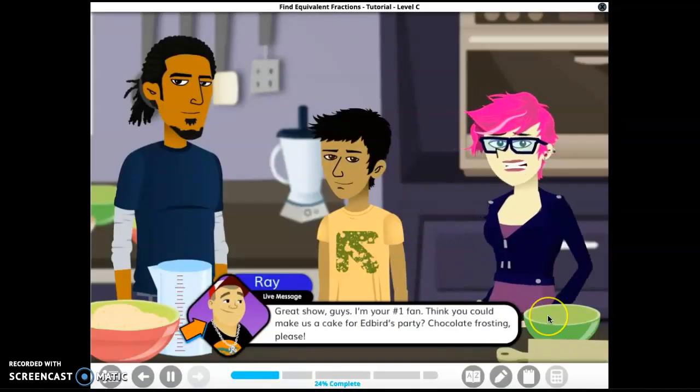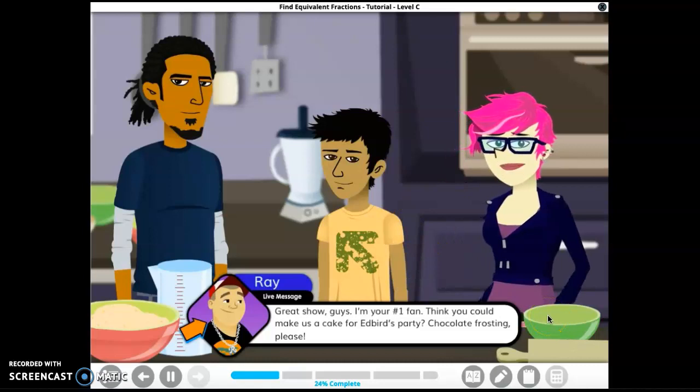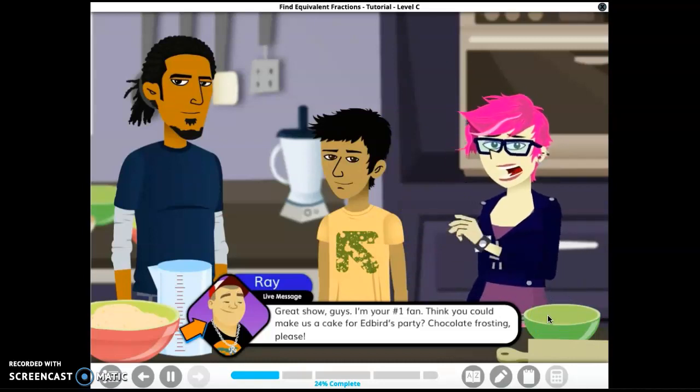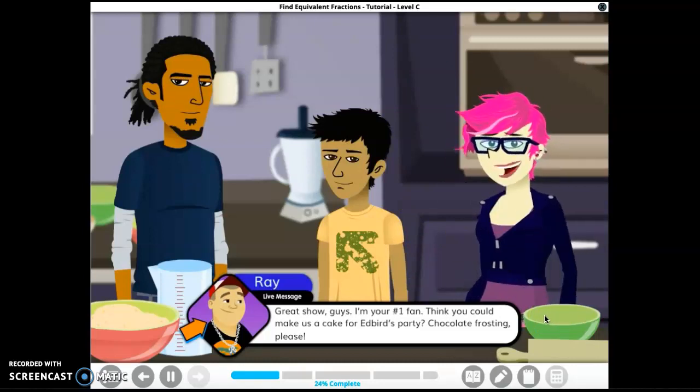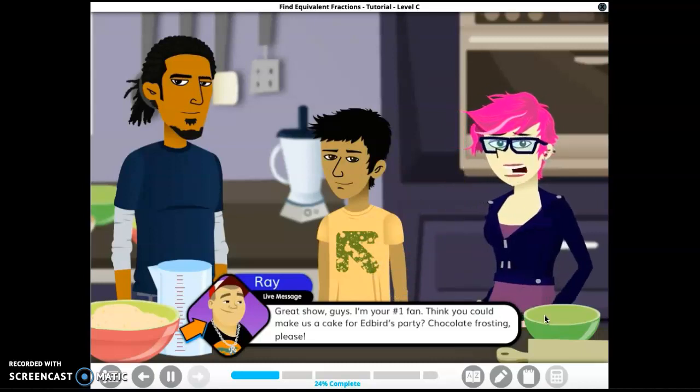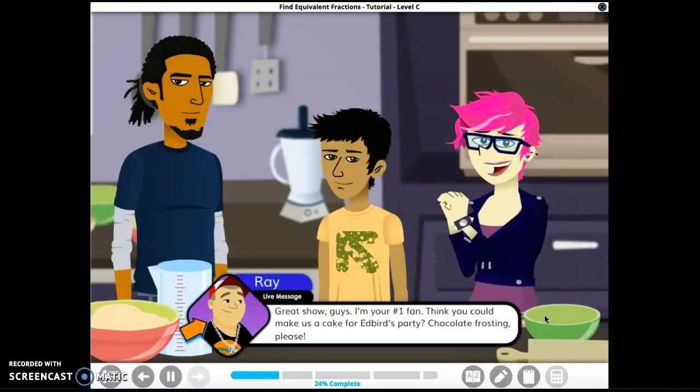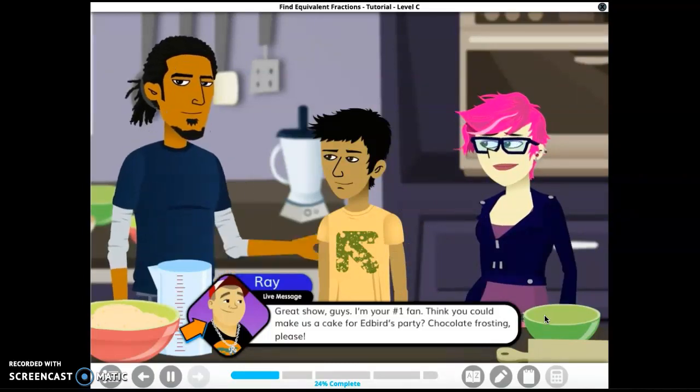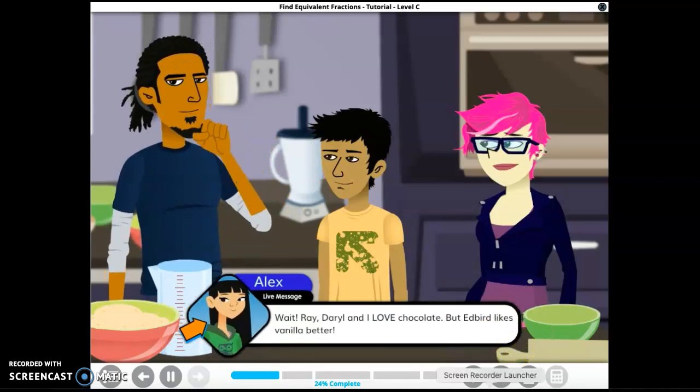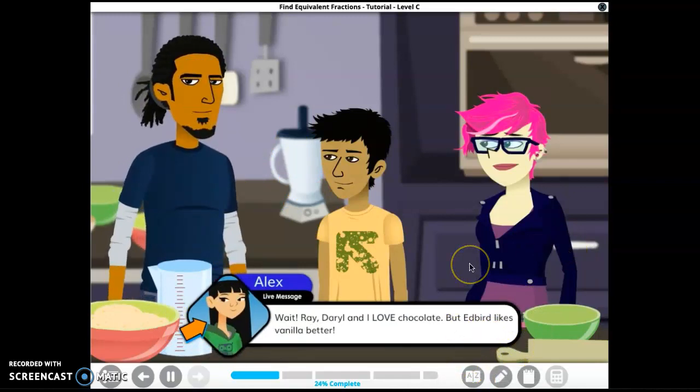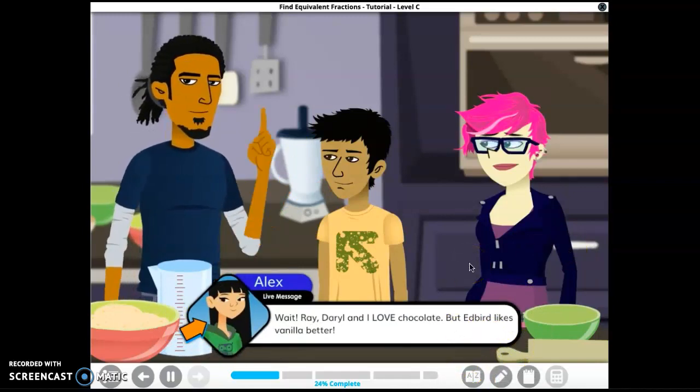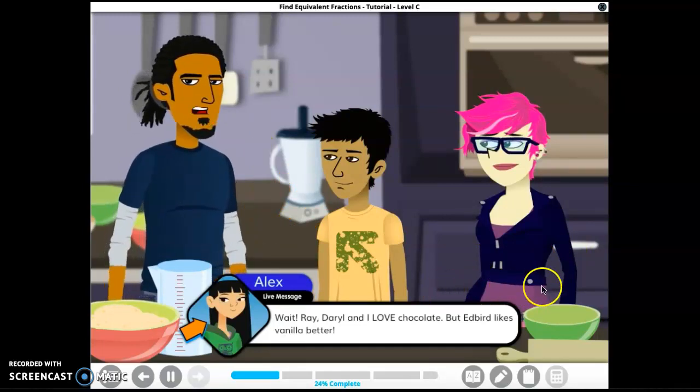Looks like we have another request from a viewer. Ray writes in, great show guys, I'm your number one fan. Think you could make us a cake for Edward's party? Chocolate frosting please. Yeah, I can handle that, but I have a feeling it can't be that easy. Yep, just like I thought. Alex writes, wait Ray, Daryl and I love chocolate but Edward likes vanilla better.